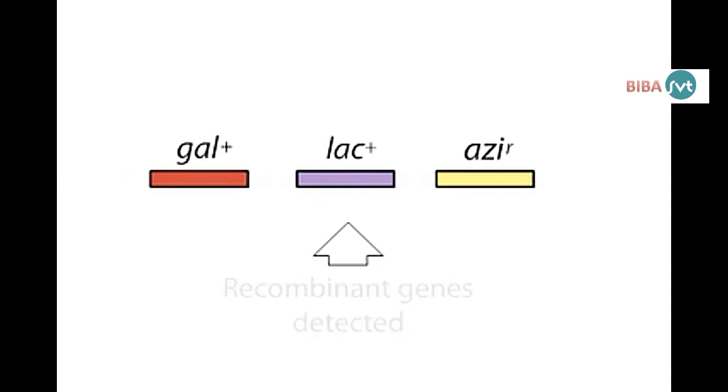Recombinant analysis reveals the order of donor genes behind the F-origin: azide, lactose, then galactose.